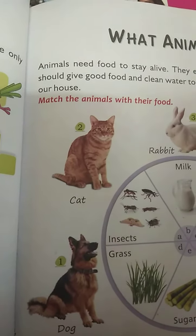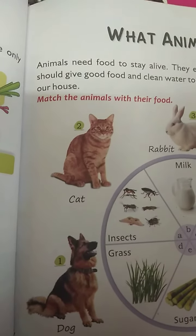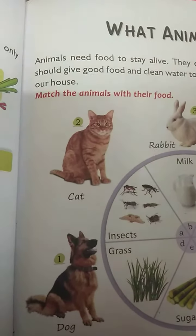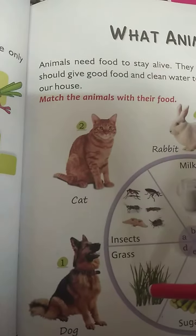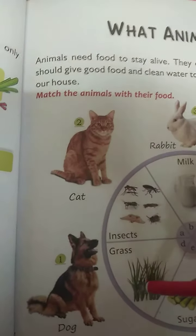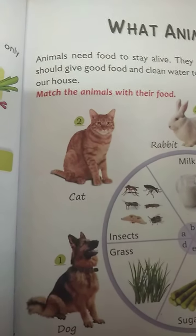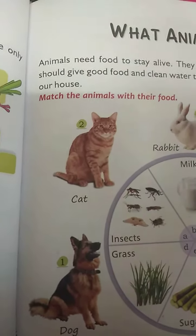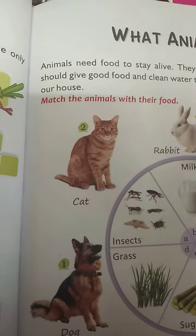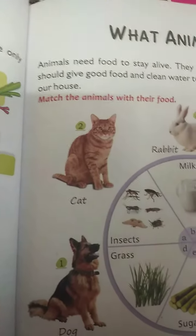Horse: what type of things does a horse eat? A horse eats grass. Rabbit: a rabbit also eats carrots.